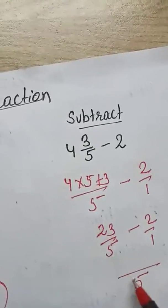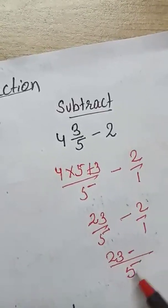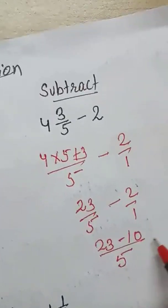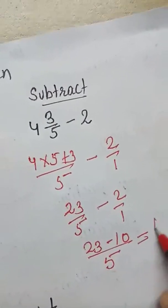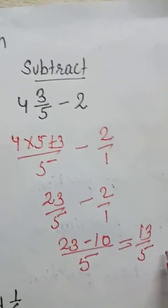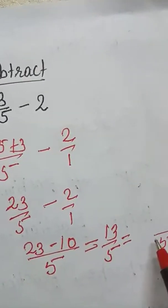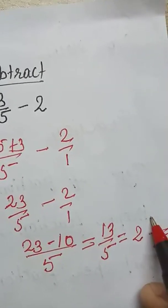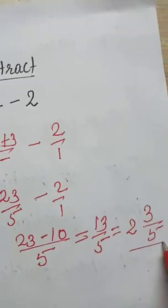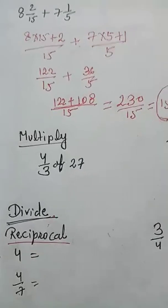LCM of 5 and 1 is 5. So 5 ones are 5; 23 stays, and 1 times 5 gives 10. So 23 minus 10 is 13 upon 5. This is an improper fraction, so convert to mixed fraction: 5 goes into 13 twice with remainder 3. Your final answer is 2 and 3 upon 5.